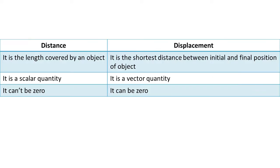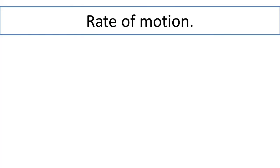To differentiate distance and displacement: distance is the length covered by an object, while displacement is the shortest distance between the initial and final position of an object. Distance is a scalar quantity, while displacement is a vector quantity. Distance cannot be zero, but displacement can be zero.